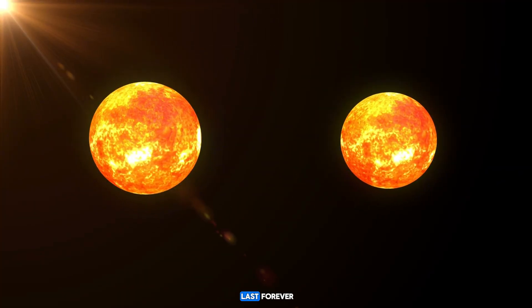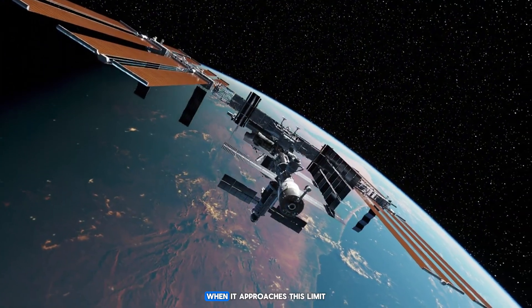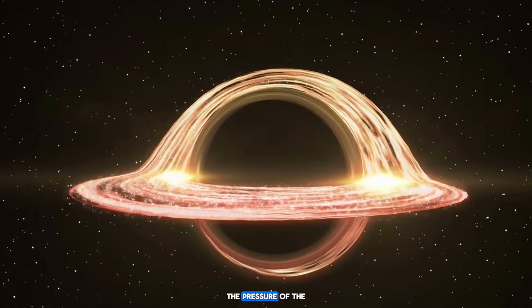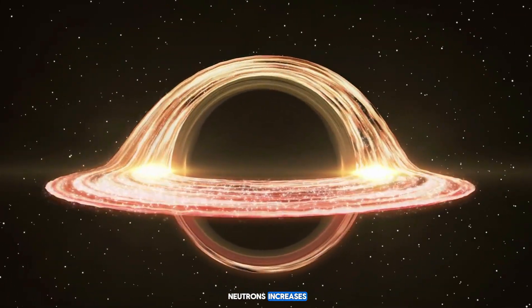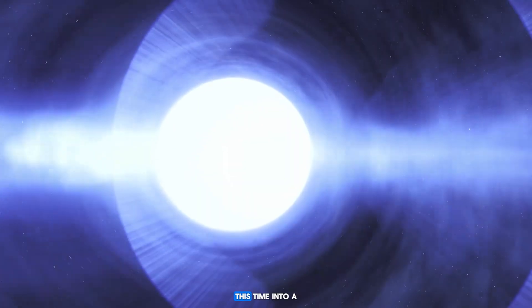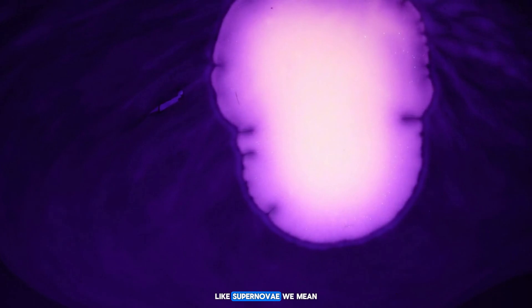This process does not last forever. There is a limit to the mass that a neutron star can contain. When it approaches this limit, the structure is unable to hold it. The pressure of the neutrons increases, gravity prevails. The pulsar collapses again, this time into a black hole. So when we say that some of these stars are dangerous, we don't mean that they will explode and send shock waves through the galaxy like supernovae.